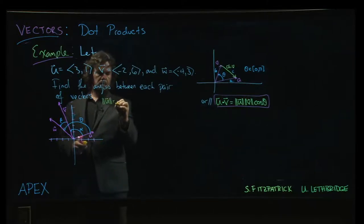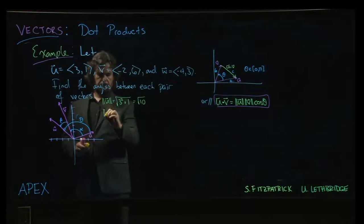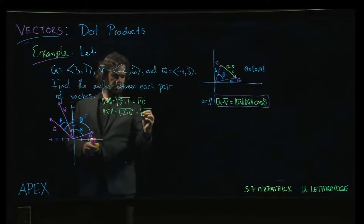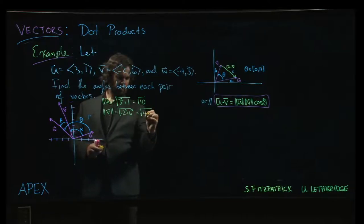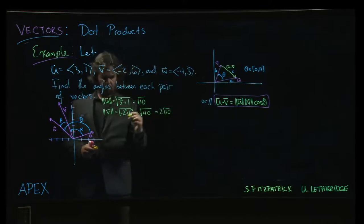So the magnitude of u, we have the square root of 3 squared plus 1 squared. So that's root 10. For v, we have minus 2 squared plus 6 squared. So that is going to be the square root of 36 plus 4, so the square root of 40. If you want to factor out the 4, you can write that as 2 times the square root of 10.